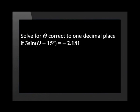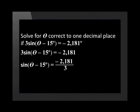These can look a little confusing, so let's try an example together. The first problem asks us to solve for theta correct to one decimal place if three sine in brackets theta minus 15 degrees close brackets equals negative 2.181. Remember, the first thing we need to do is isolate the sine ratio. We divide by 3 and get sine of theta minus 15 degrees equals negative 0.727.